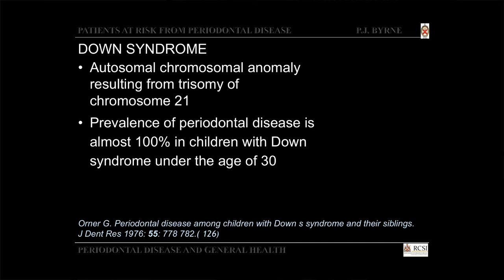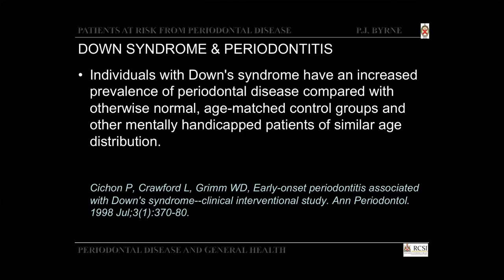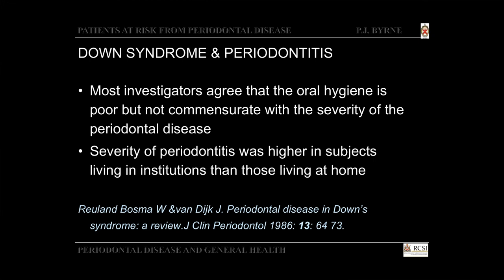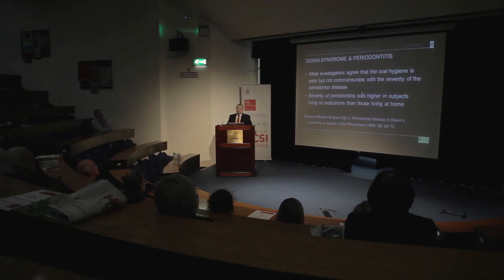Down syndrome — the prevalence of periodontal disease is very high in children with Down syndrome. The onset of disease is apparent even in the primary dentition; the periodontal disease is often very severe, especially in the upper and lower anterior teeth, and can progress quite rapidly. Individuals with Down syndrome have an increased prevalence of periodontal disease compared with age-matched controls. Most investigators agree that oral hygiene is poor but not commensurate with the severity of the periodontal disease, and severity is higher in subjects living in institutions rather than those cared for at home.